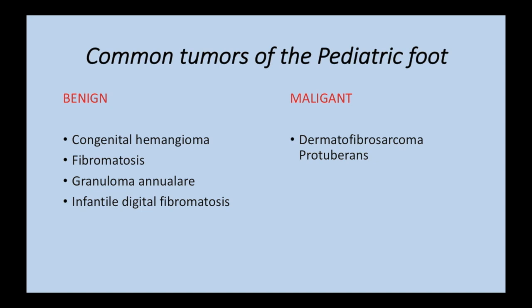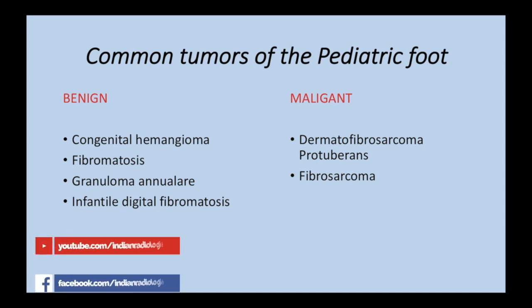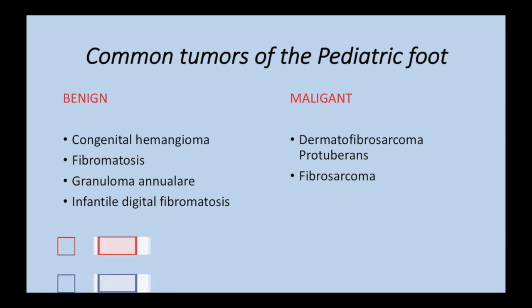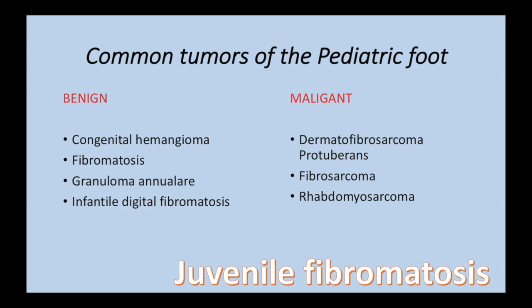For malignant tumors of the pediatric foot: dermatofibrosarcoma protuberance can occur in this age group but is mostly subcutaneous. Fibrosarcoma is very much in the differential — the pattern of calcification can fit, but the growth over one year and lack of impressive enhancement makes this a doubtful diagnosis compared to benign fibromatosis. Rhabdomyosarcoma presents heterogeneously but usually shows more T2 hyperintensity and impressive enhancement. We therefore considered fibromatosis as the leading diagnosis, specifically juvenile hyaline fibromatosis as a highly possible diagnosis in our report.